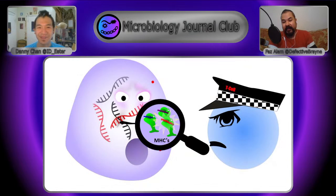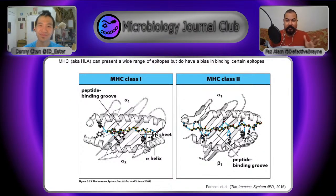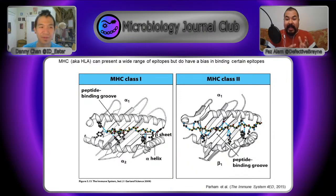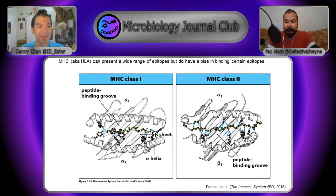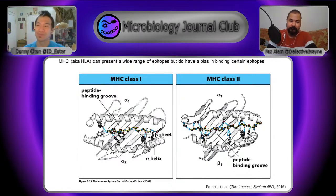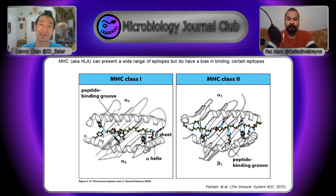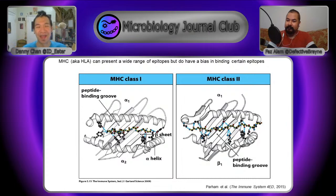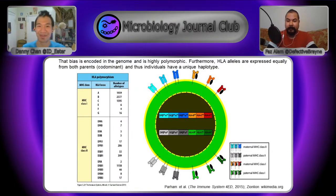MHC class one, also known as HLA class one, has a wide range of epitopes, which relates to Human Leukocyte Antigen typing. Looking at the molecular image of that MHC clamp, it pinches down on two parts of the peptide — the stuff in the middle can be anything, giving variability. But because it clamps on either side, there's a genetic bias in where it can clamp.